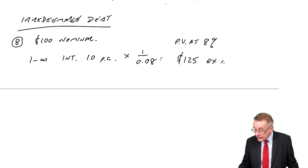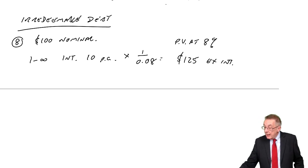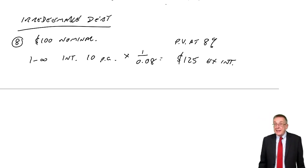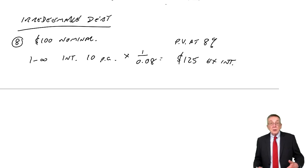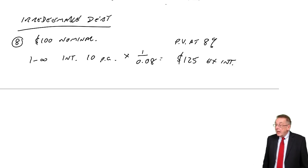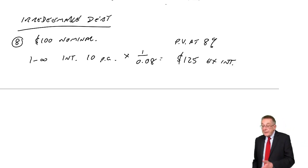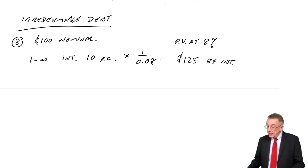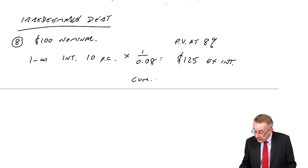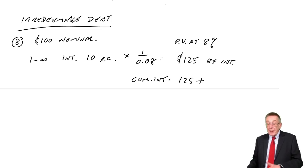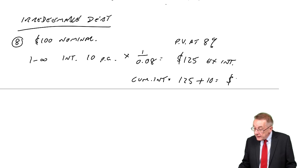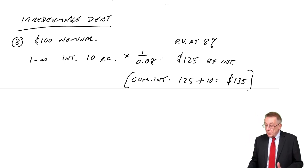That's an ex-interest market value — it's assuming that interest has just been paid, so the first interest will be in a year's time. Just as with shares, always in the exam, market values are ex-interest unless you're specifically told different. If they were about to pay the interest, the cum-interest market value is the ex-interest value plus the interest about to be paid — $10 — giving $135. So exactly the same as with equity.